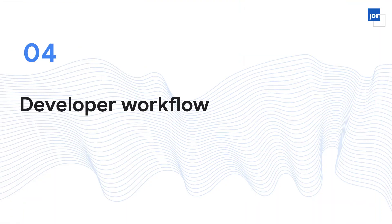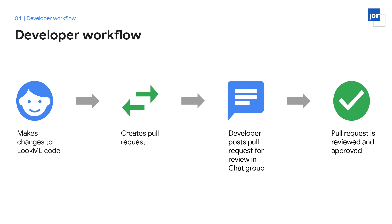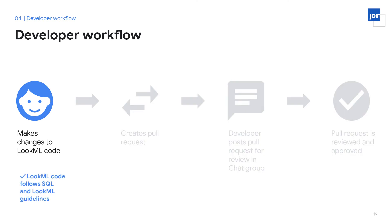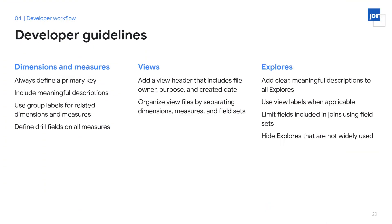Let's review our developer workflow. Once a user is an ambassador, they can begin making changes to the LookML code, ensuring that those changes follow the LookML, SQL, and pull request guidelines we follow internally. Our LookML guidelines can be broken down into three sections: fields, views, and explores. For dimensions and measures, we want to ensure that we always define a primary key, which is crucial for Looker's symmetric aggregates to be executed accurately.